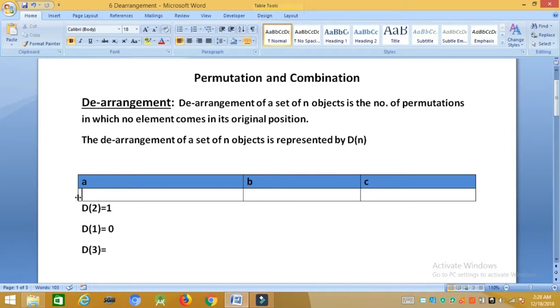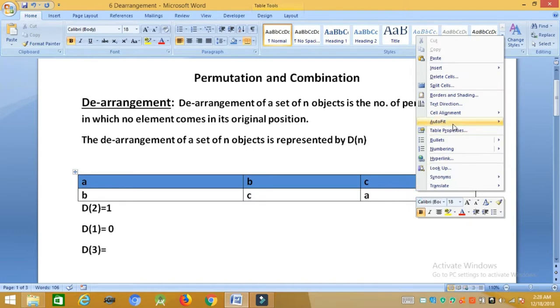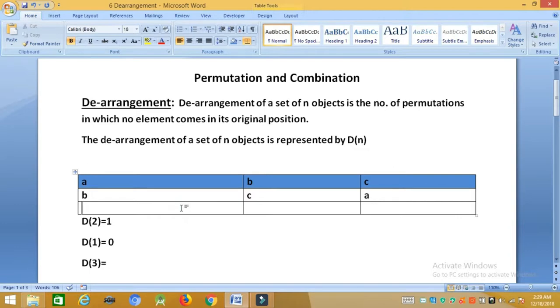Here we have b, c, and a. So what can be the possible ways of derangement? They can be b, c, and a. Here we can see that no object or letter comes in its original position. Can I think of something else? Are there any more ways of doing this? Yes, we can have c, a, and b. This is another derangement in which no letter comes in its original position. Can I think of something else? No, I don't think there is any other possibility or any other permutation in which I can displace all these objects. So there are only two ways. So d3 equals 2.